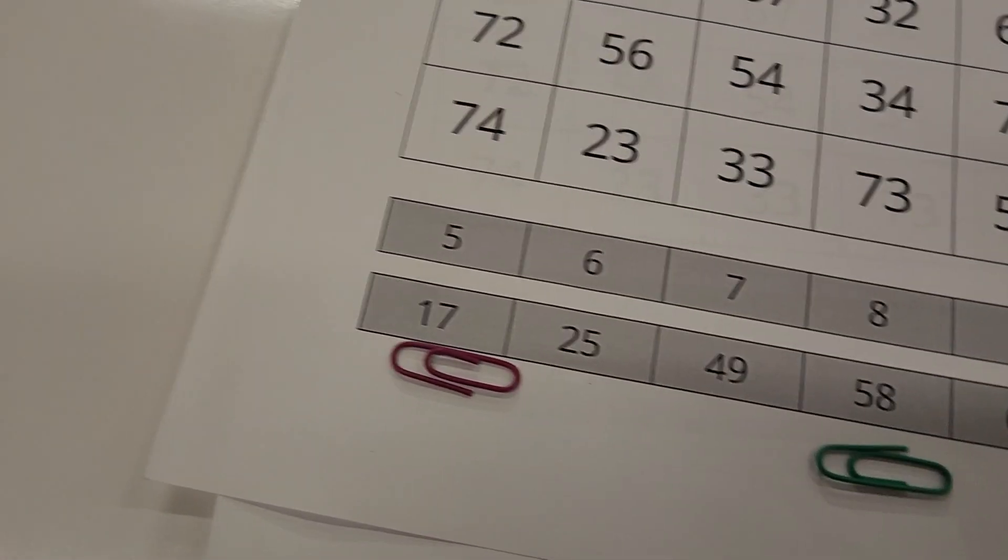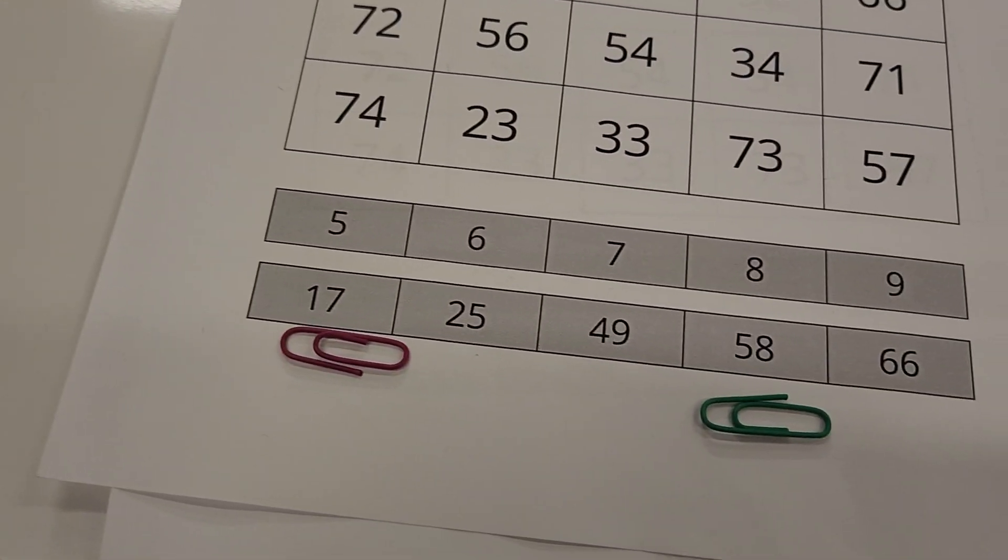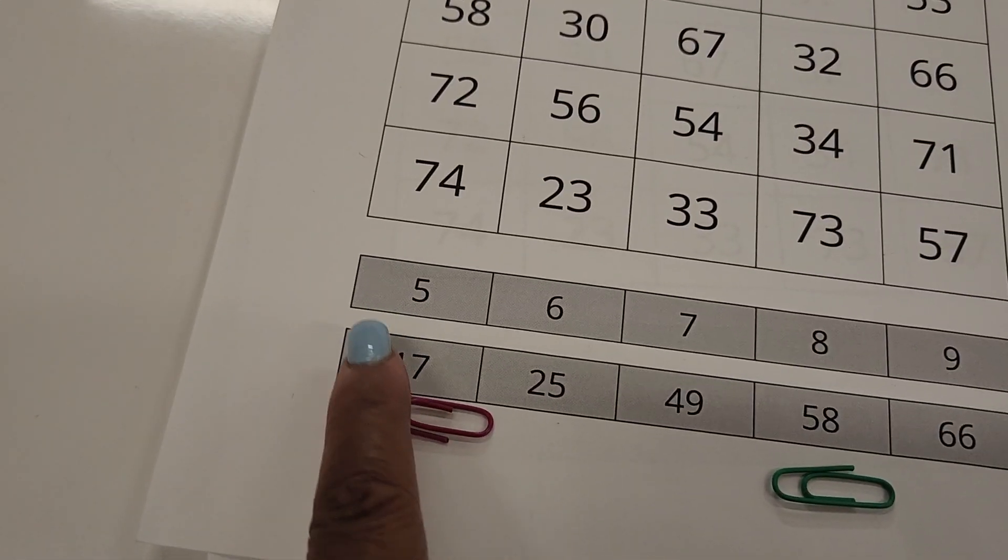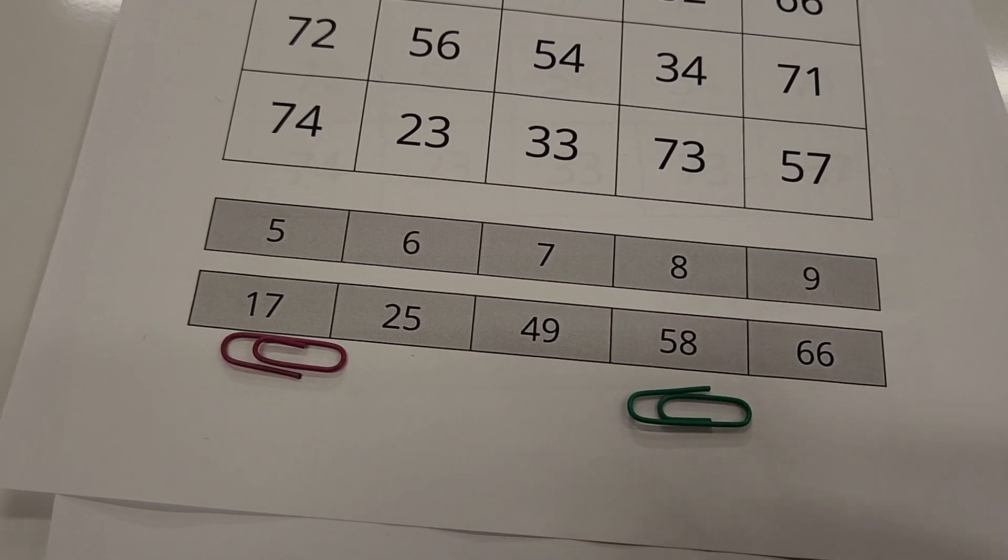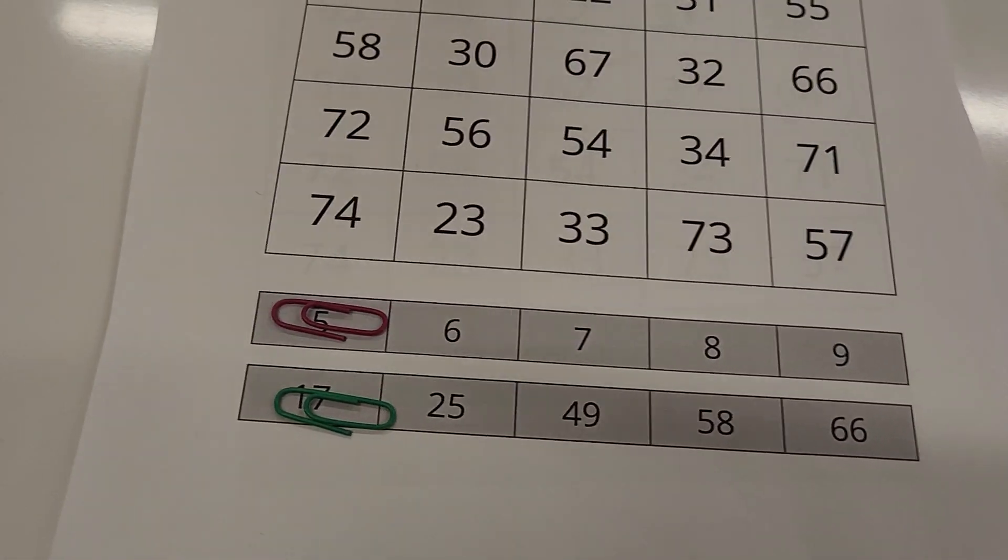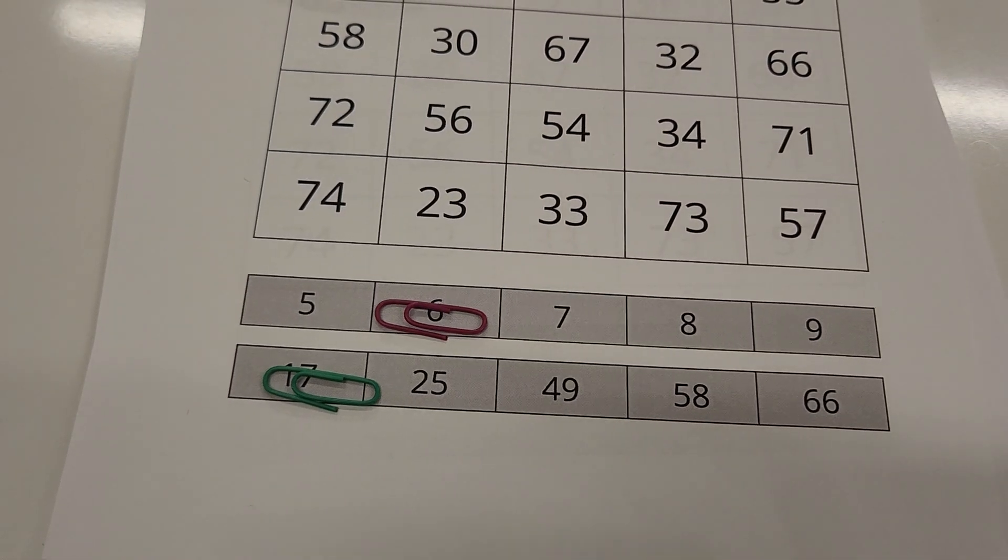So now, the first player has to move their chip. You can only stay on your row. So this is the row for the first player. This is the row for the second player. Alizea, go ahead and move your chip. Move your paper clip. Good.